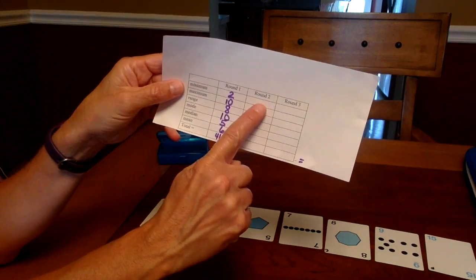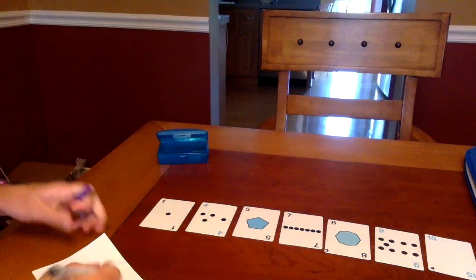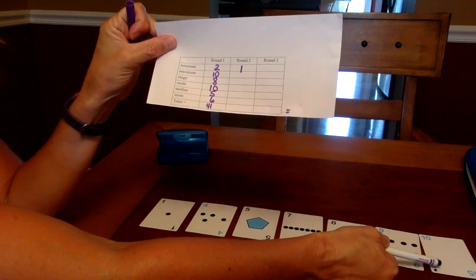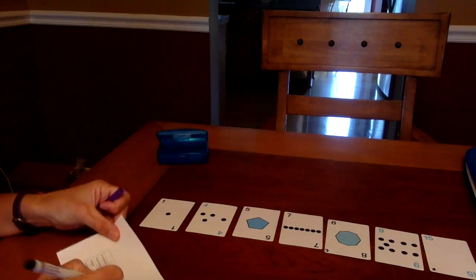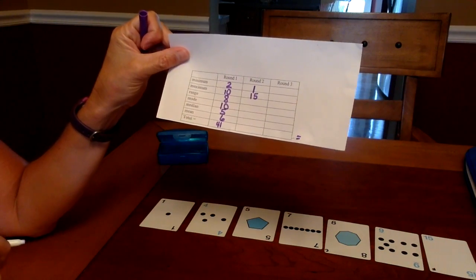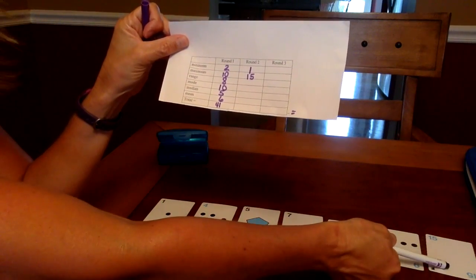The first thing I do is look for my minimum. My minimum value is 1, so I go ahead and record that. The next is the maximum. My maximum or largest card is 15, so I go ahead and record 15. My partner is doing this at the same time as I am. Range is the maximum minus the minimum.